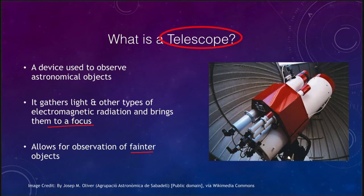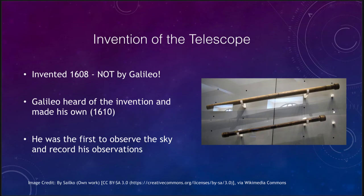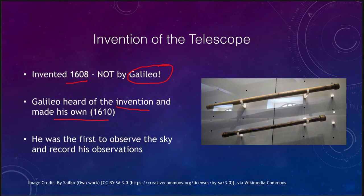Let's look at some of those early telescopes and the invention of the telescope. The telescope was actually invented in 1608, but it was not invented by Galileo. Galileo is often credited with the invention of the telescope, and we see some of his telescopes here. But Galileo heard of this invention and then made his own. What Galileo did do was that he was the first we know of to observe the sky with the telescope and to record his observations.